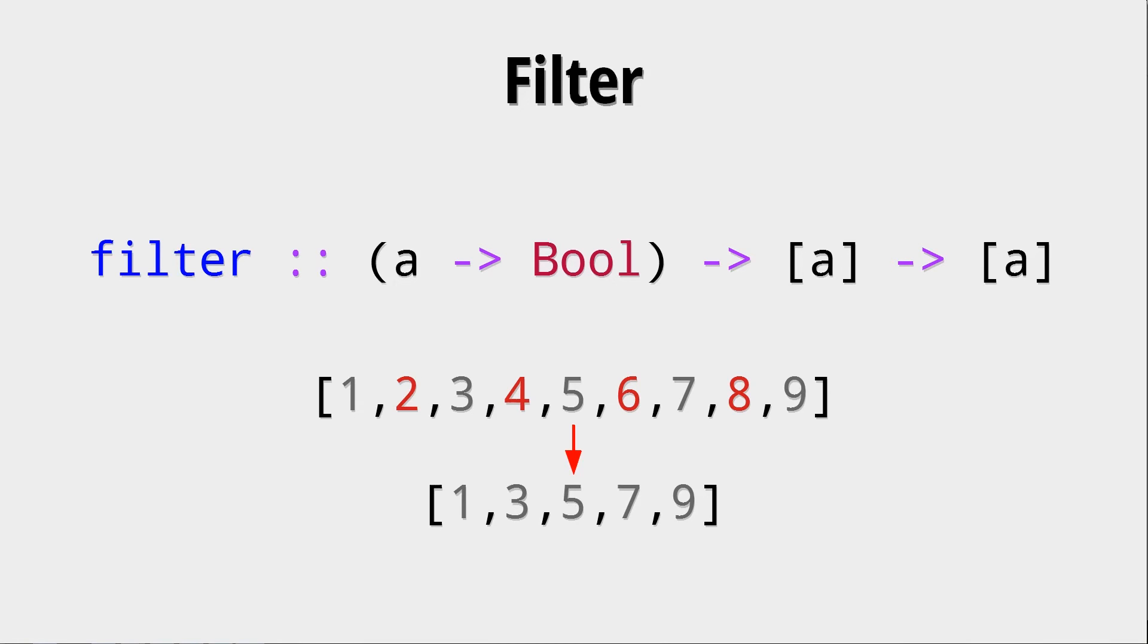Of course the type of the list is not changed. We get a list of type A and we return a list of type A.